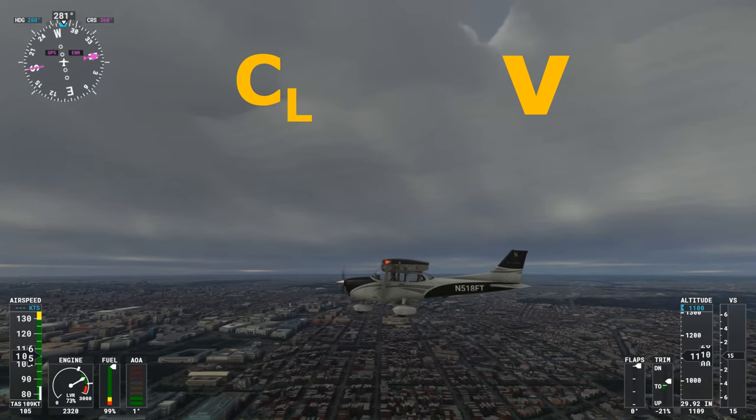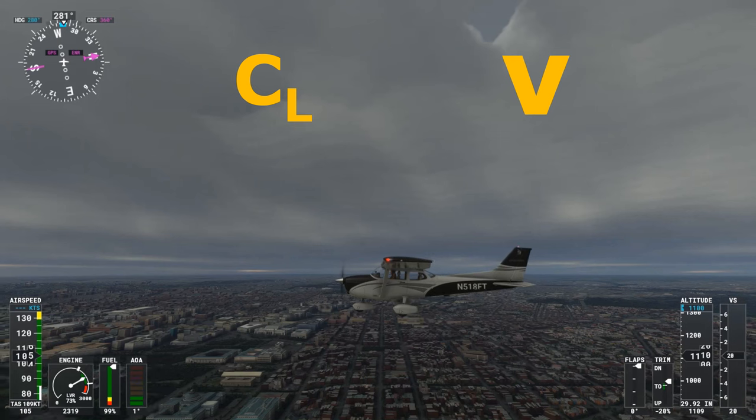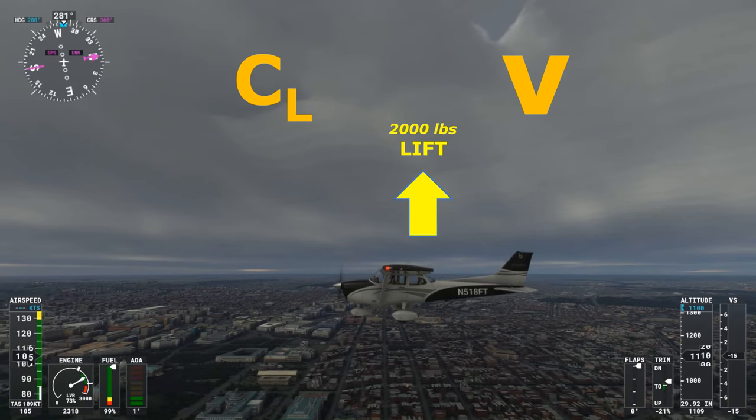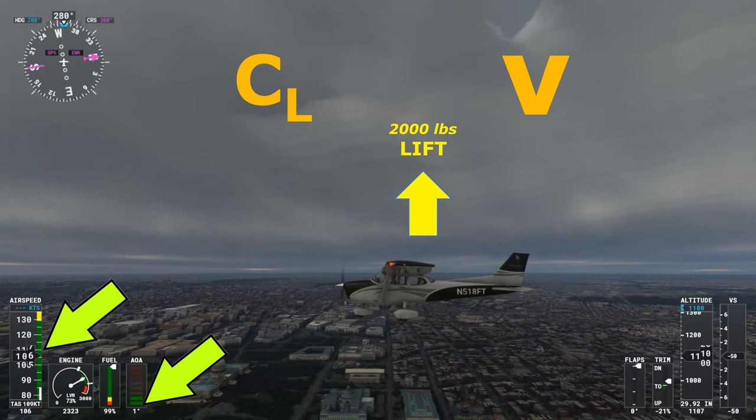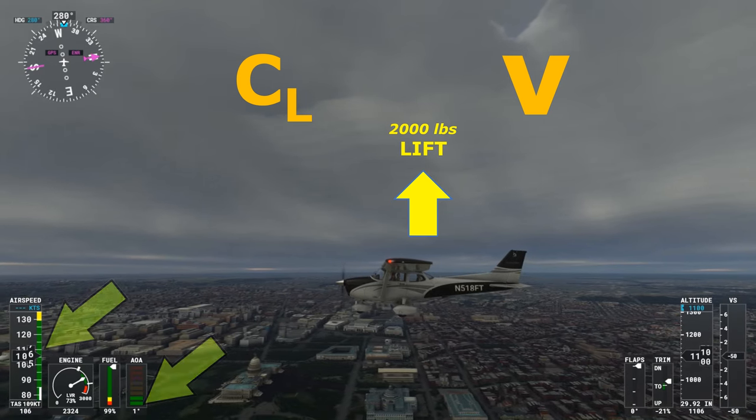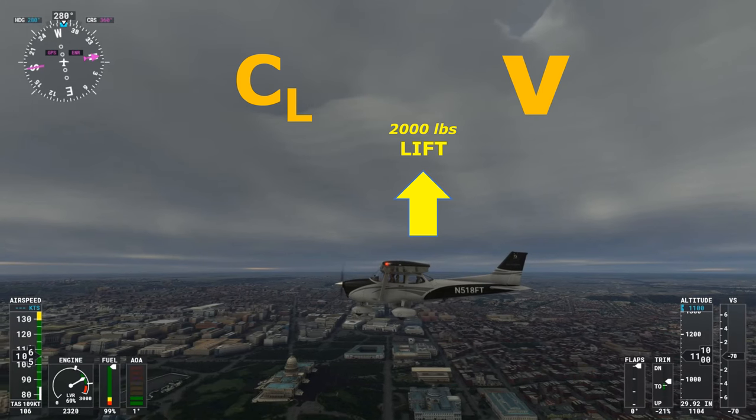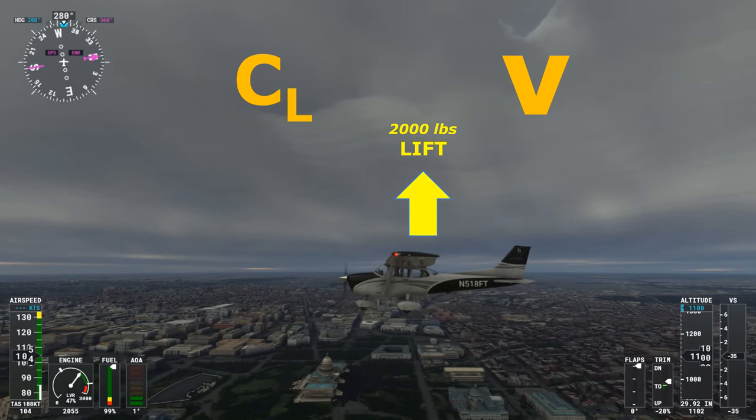We're in equilibrium. If our aircraft weighs 2,000 pounds, we have right now 2,000 pounds of lift. At this airspeed, a relatively low angle of attack, one degree, will give us the coefficient of lift necessary to maintain that 2,000 pounds of lift. Let's reduce the power and begin to slow down.